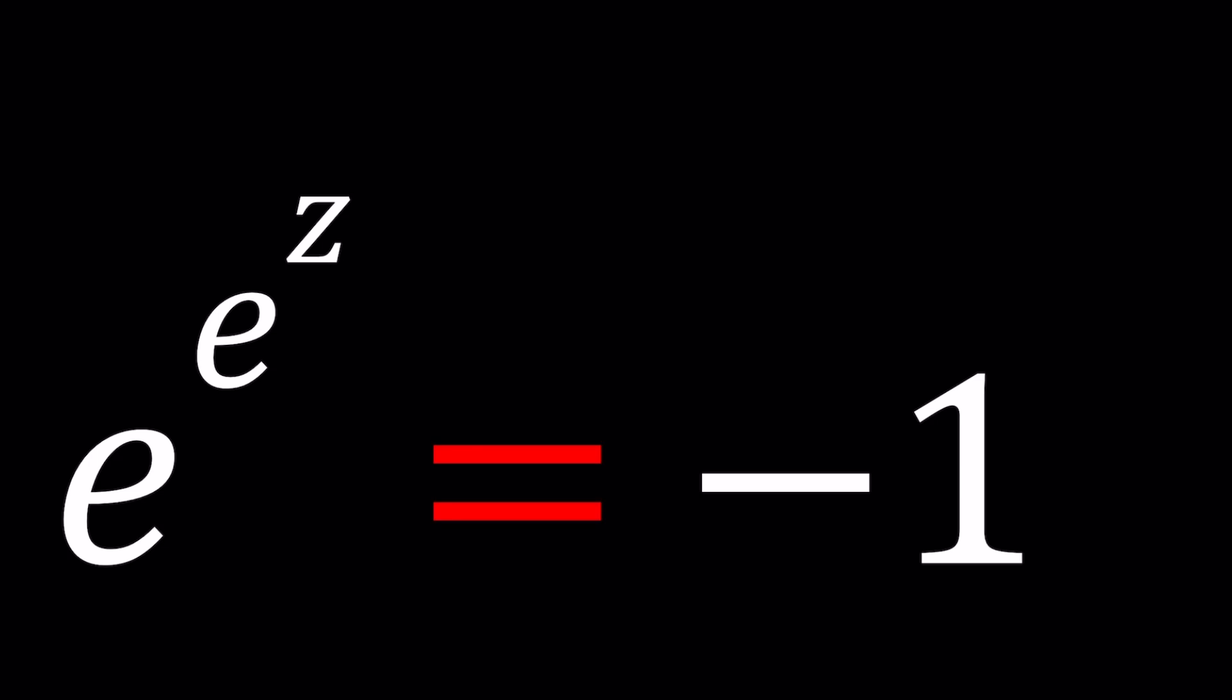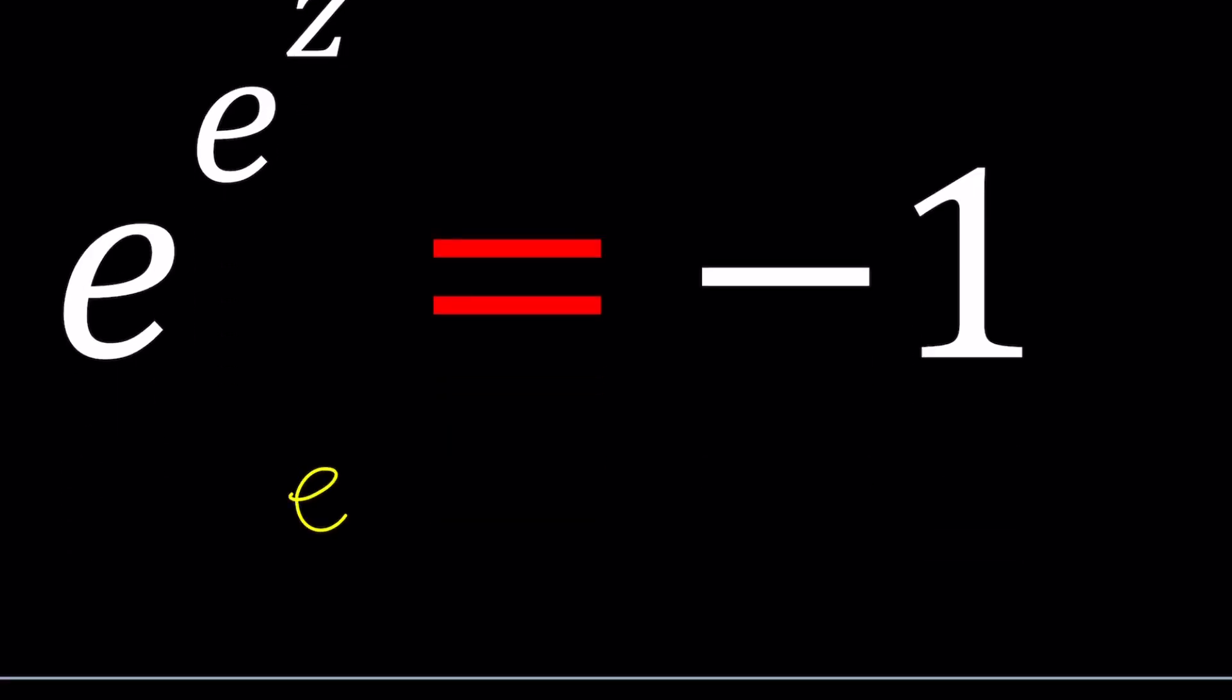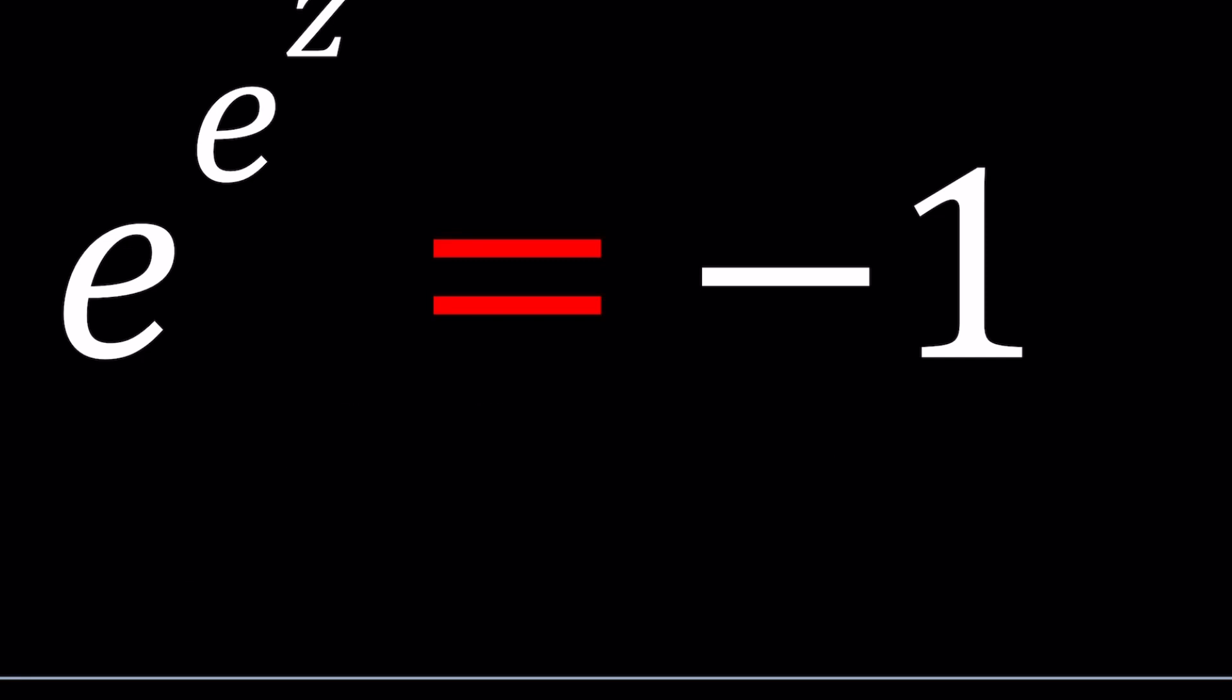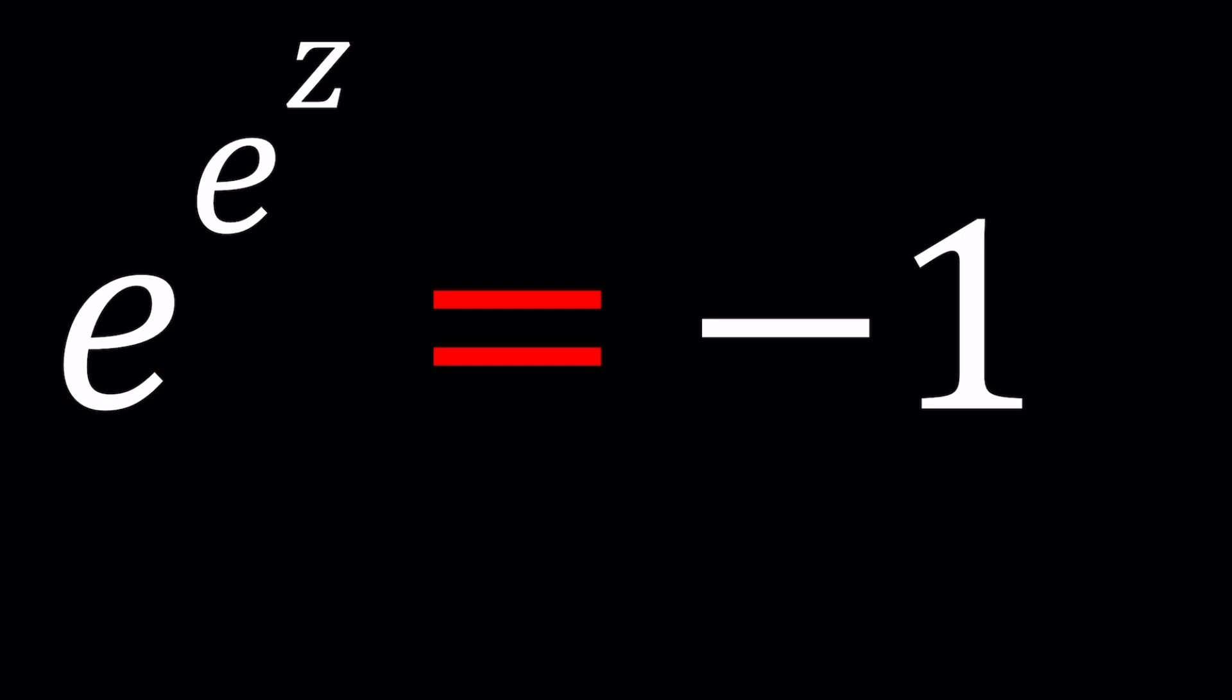We have E to the power E to the power of Z equals negative 1 and we're going to be solving for Z values. We've done similar problems before, I think we've done E to the E to the Z equals 1 and that was an interesting problem because this might imply that E to the Z equals 0 but as you know that's impossible. For any complex number this is not going to work. So what happens if that's equal to negative 1? That's going to be even crazier. Let's go ahead and make some guesses at this point, see if you can guess Z.